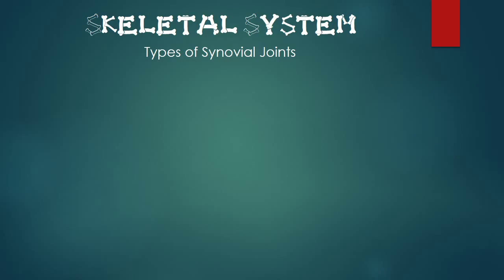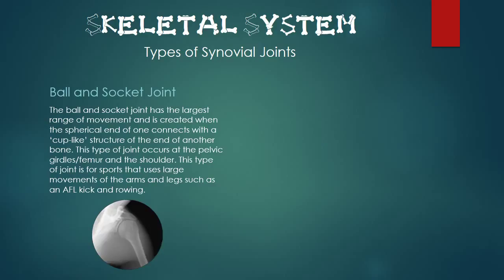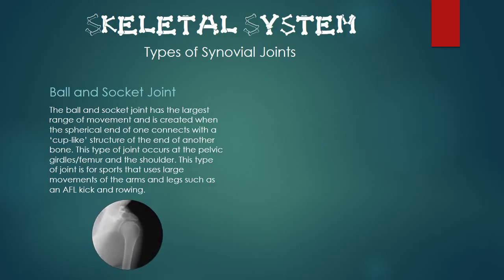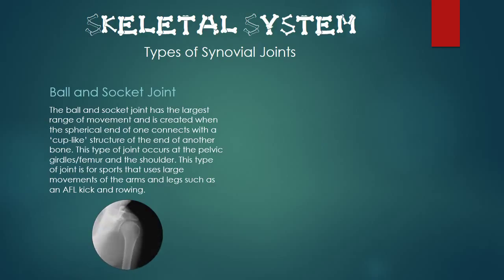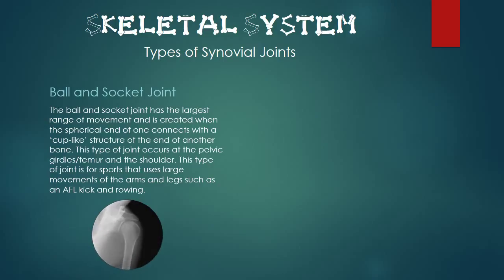Next is the ball and socket joint. The ball and socket joint has the largest range of movement and is created when a spherical end of one bone connects with a cup-like structure of another bone. This type of joint occurs at the pelvic girdles and the femur, and the shoulder. This type of joint is used for sports that involve large movements of the arms and legs, such as AFL kicking and rowing.